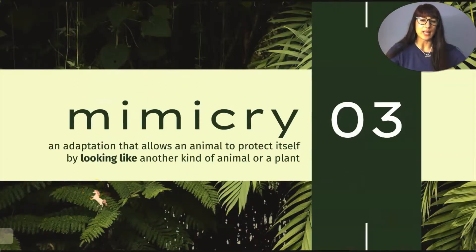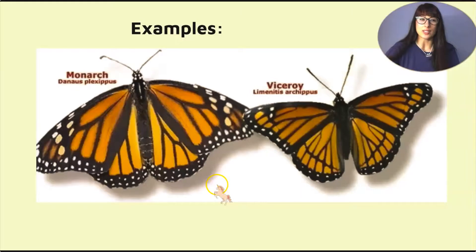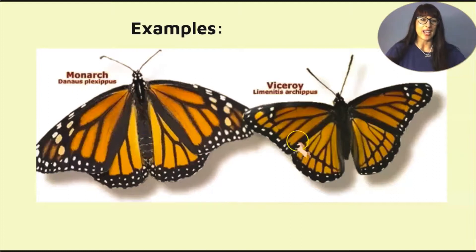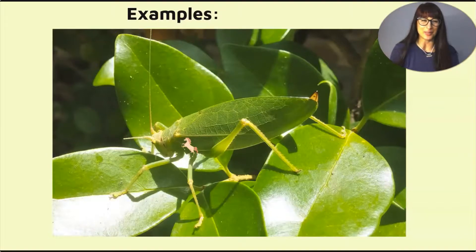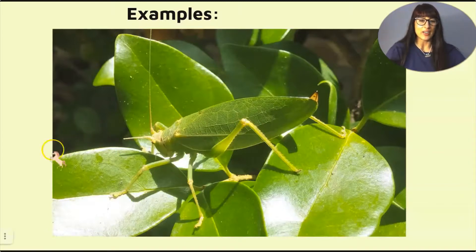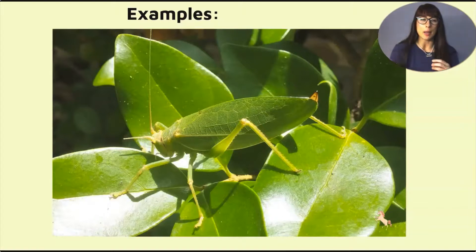Mimicry is an adaptation that allows an animal to protect itself by looking like another kind of animal or a plant. Some animals resemble each other very closely. We talked about the monarch and viceroy butterflies — the viceroy is not poisonous, so it mimics the monarch to trick predators into thinking it's poisonous. That is its strategy to survive. Here we also have an insect that looks very much like a leaf — it resembles the leaf, and this is another example of mimicry.